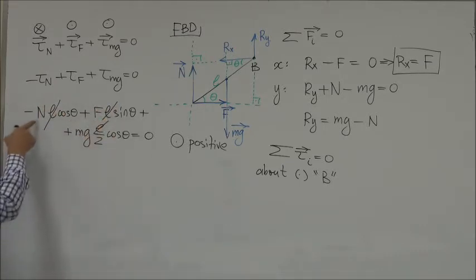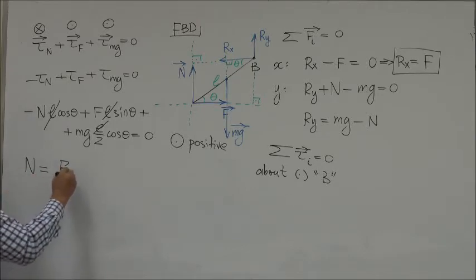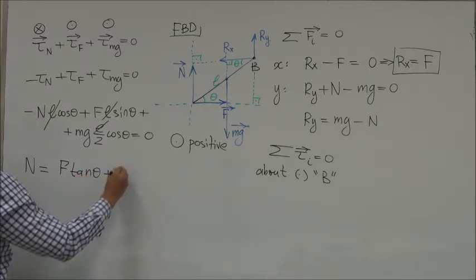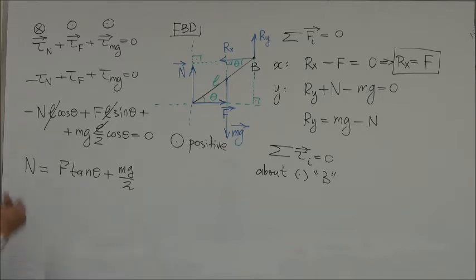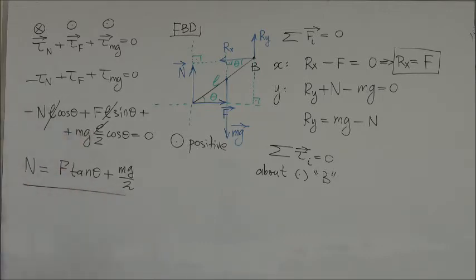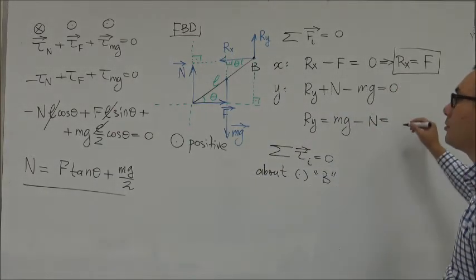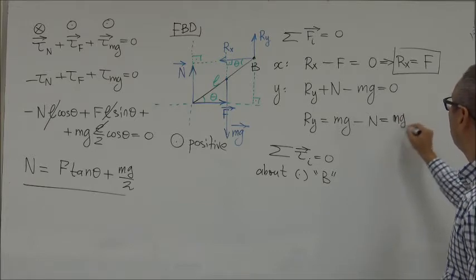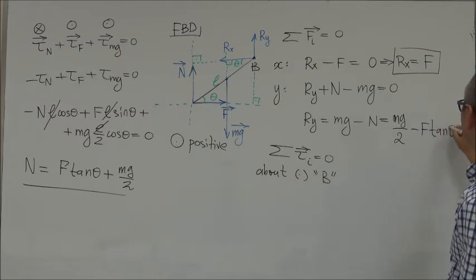From the torque equation, L cancels and we solve for N: N equals F·tan θ plus mg/2. Once we know the normal force, we substitute back: Ry equals mg/2 minus F·tan θ.